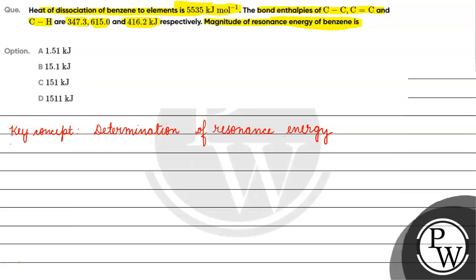There is agreement between the enthalpy of formation calculated from bond energies and the one determined experimentally — the two values are almost similar. But if resonance is present, the values differ.